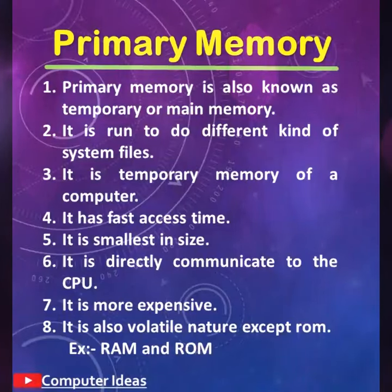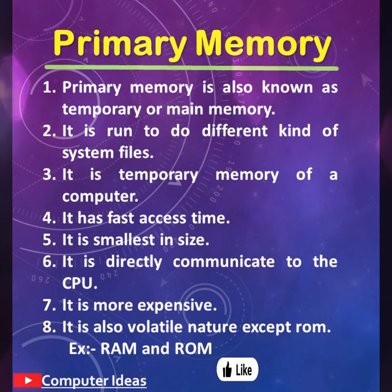Number 1: Primary memory is also known as temporary or main memory. Number 2: It is run to do different kinds of system files. Number 3: It is temporary memory of a computer. Number 4: It has fast access time. Number 5: It is smallest in size.